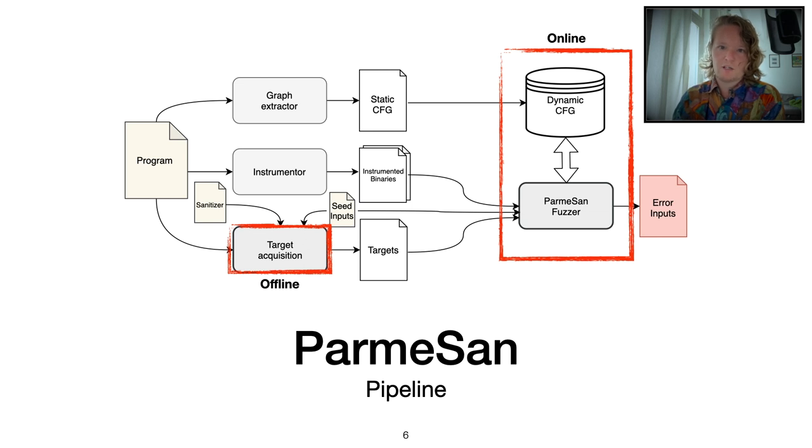In the offline phase, we do target acquisition where we try to acquire the targets that we actually want to reach in the online phase. In the online phase, we have the Fuzzer which works in cooperation with the dynamic control flow graph to actually steer the fuzzing process towards these targets that we acquired.